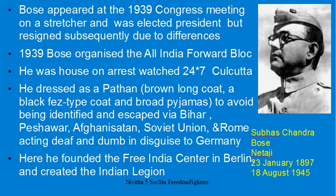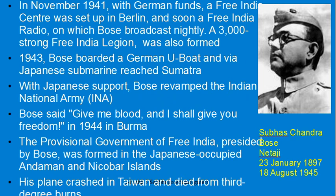Escaping in disguise through different countries — Peshawar, Afghanistan, Soviet Union, and Rome — Bose reached Germany. There, with German funds, he set up the Free India Radio, Free India League, Free India Center, and Free India Legion, with around 300,000 supporters. In 1943, he boarded a German submarine, transferred to a Japanese submarine, and finally reached Sumatra. With Japanese support, he formed and revamped the Indian National Army and declared: 'Give me blood and I shall give you freedom.' This was in 1944 in Burma.